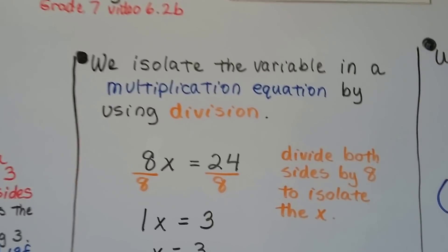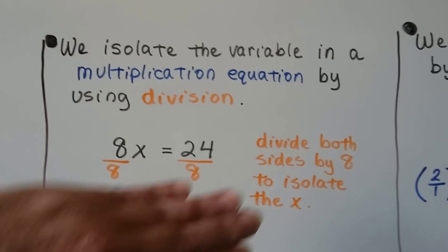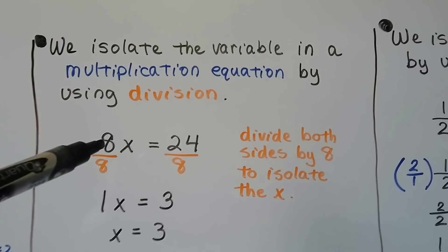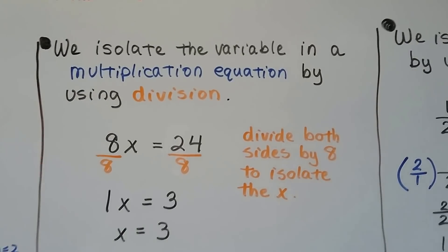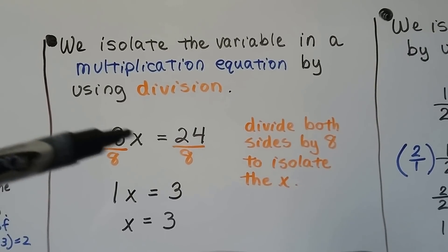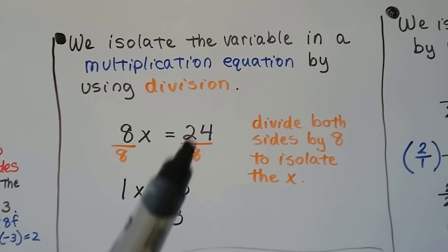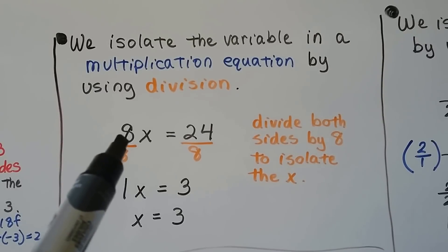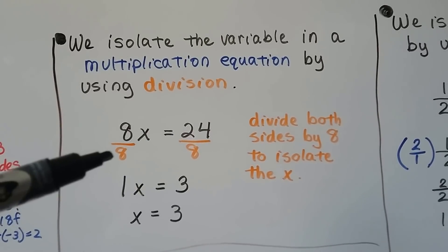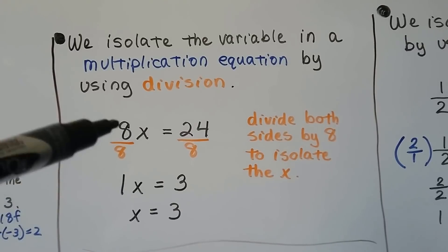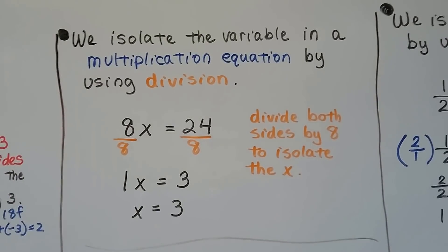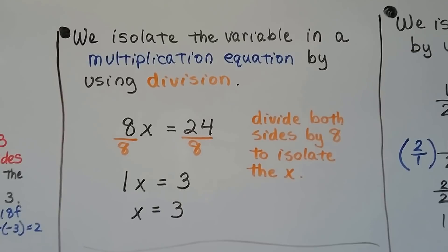We isolate the variable in a multiplication equation by using division. We have 8x equals 24 — when the coefficient is next to the variable, that means 8 times some number equals 24. So we divide both sides by the 8 — you do the coefficient next to the variable, not the 24. That gives us 8 over 8, which is 1, so we just get x. 24 divided by 8 is 3, so x equals 3.